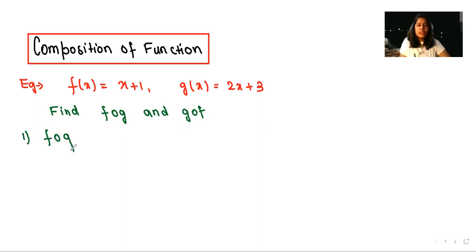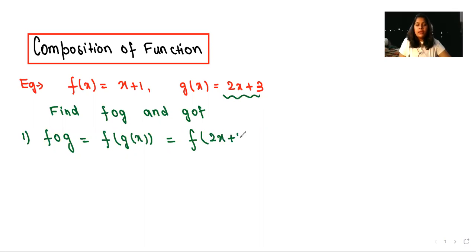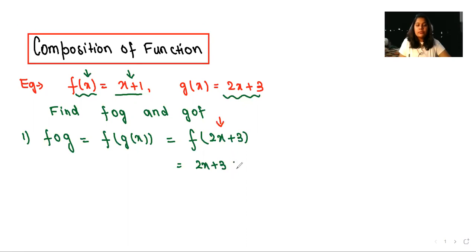So first, f of g — we can write this as f(g(x)). We are already given g(x) = 2x + 3, so we substitute 2x + 3. Now we have f(2x + 3), and since f(x) = x + 1, wherever we have x we substitute 2x + 3. So this becomes (2x + 3) + 1, which equals 2x + 4. This is the answer for f of g.